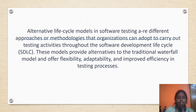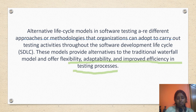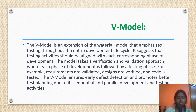Basically, alternative life cycle models in software testing are different approaches or methodologies that organizations can adopt to carry out testing activities throughout the software development life cycle (SDLC). These models provide alternatives to the traditional waterfall model and offer flexibility, adaptability and improved efficiency in the testing process. Among these alternative life cycle models, the first one we are going to see is the V model.